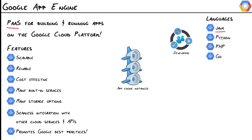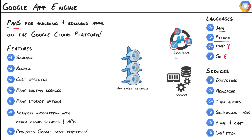You choose your language — Java and Python are currently fully supported, PHP is in preview, and Go is experimental. But essentially, you build, test, deploy, rinse, and repeat.